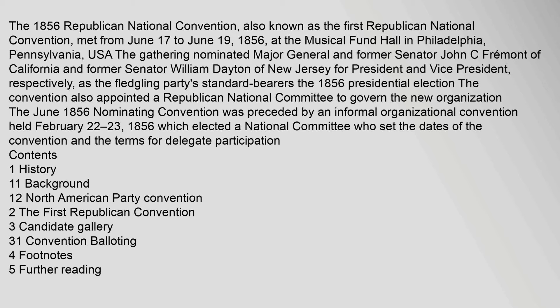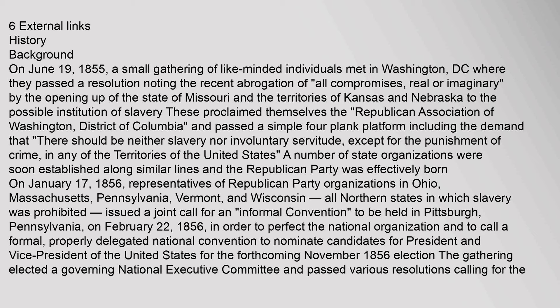On June 19, 1855, a small gathering of like-minded individuals met in Washington, D.C., where they passed a resolution noting the recent abrogation of all compromises, real or imaginary, by the opening up of the state of Missouri and the territories of Kansas and Nebraska to the possible institution of slavery. These proclaimed themselves the Republican Association of Washington, District of Columbia, and passed a simple four-plank platform including the demand that there should be neither slavery nor involuntary servitude, except for the punishment of crime, in any of the territories of the United States. A number of state organizations were soon established along similar lines.